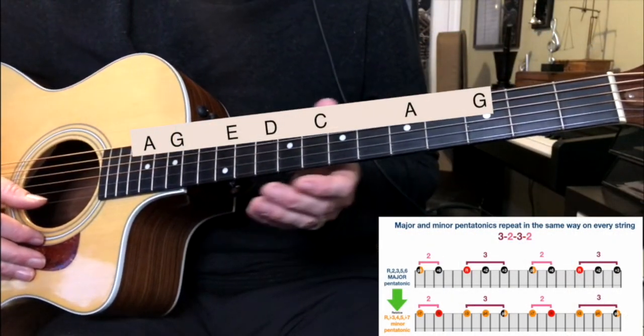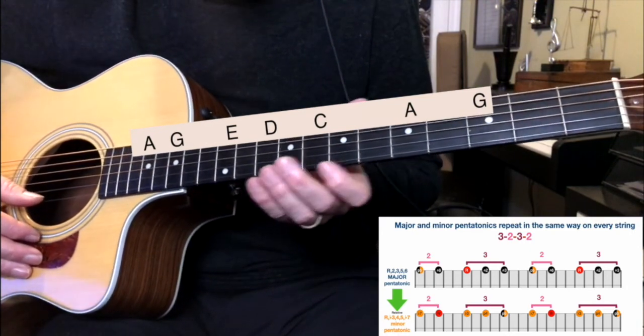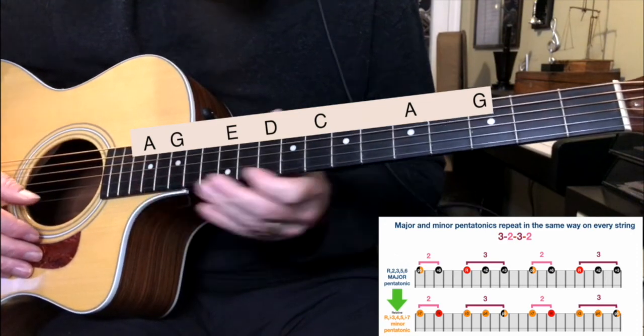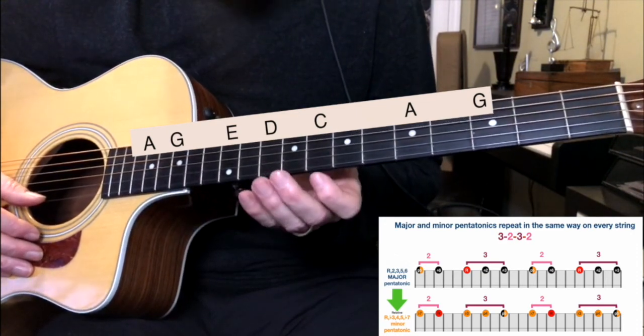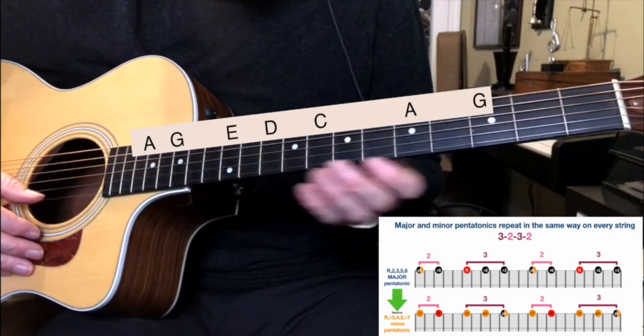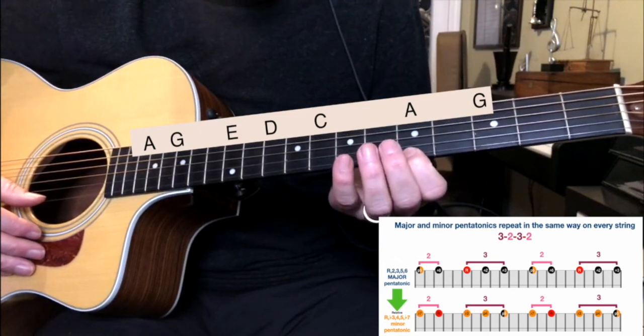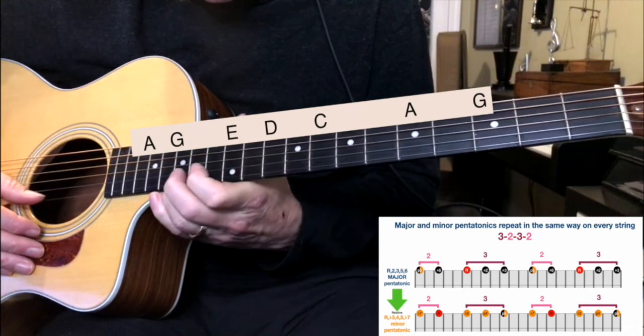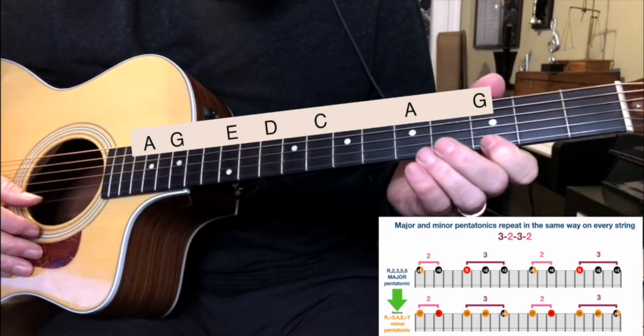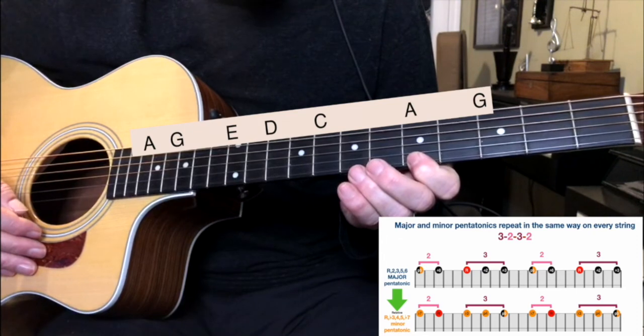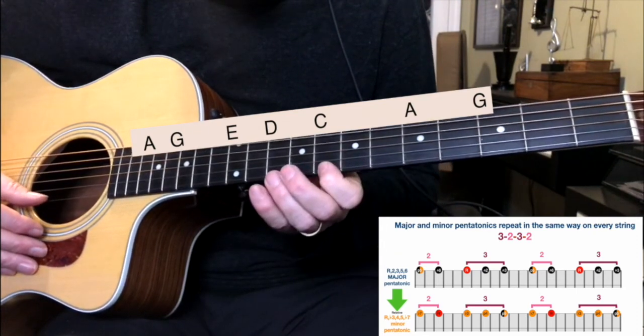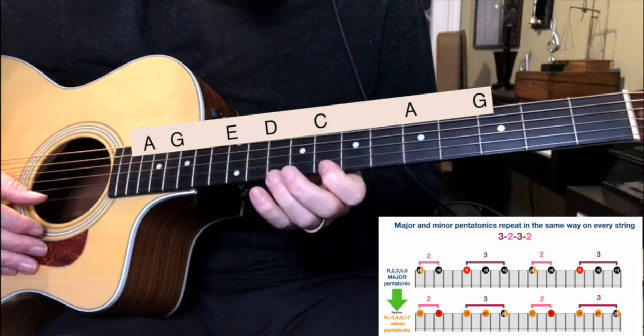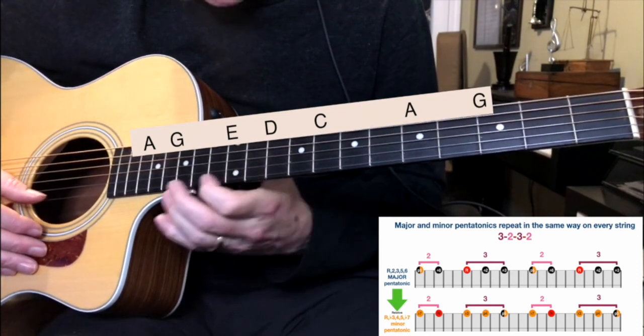So the major and minor pentatonics really repeat in the same way on every string. If this is the C pentatonic as we were doing before, an A minor is exactly the same notes except instead of starting on a C you start on an A. You start down here and then you go up to the three. It's exactly the same notes, but you're just starting on an A if you're playing an A minor or on a C if you're starting in C.